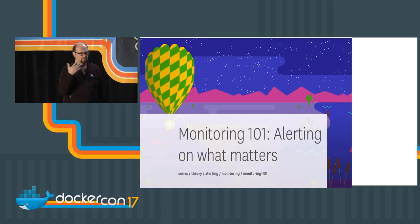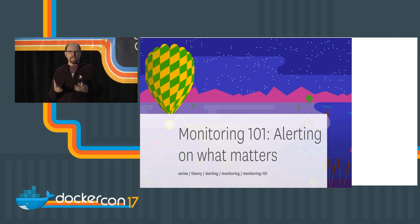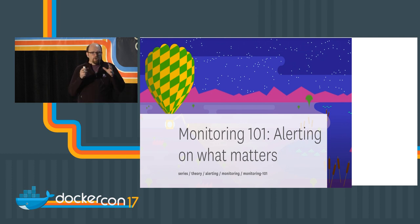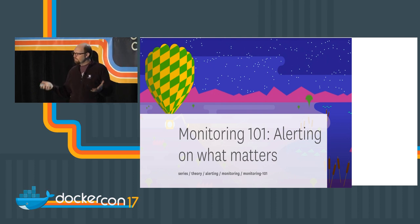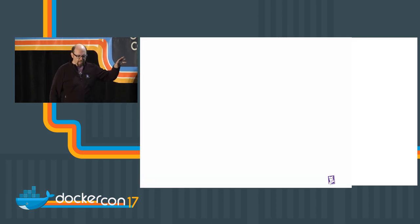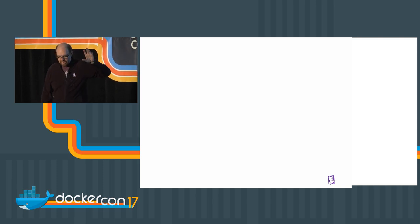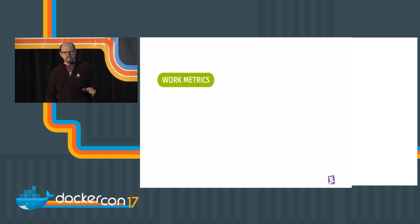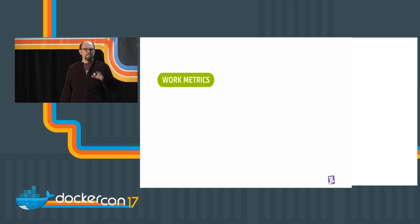At Datadog we have a team focused on building great content about how to monitor — how to think about monitoring Postgres, Redis, Docker. One of the first articles was Monitoring 101. In it, we have a system of three buckets. The first bucket is work metrics — the most important thing, where you really need to spend your time to ensure things are going well.